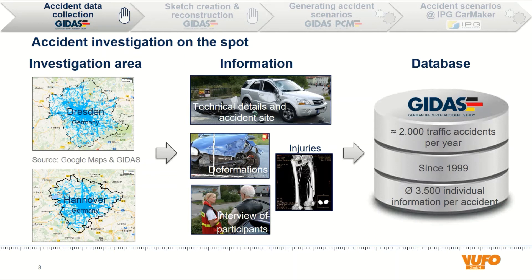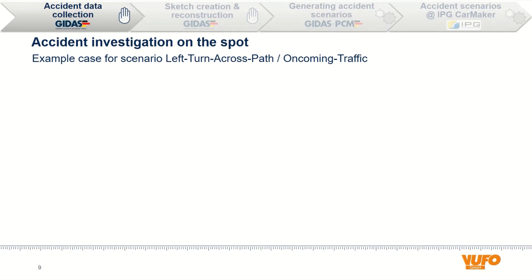This data is collected in the GEDAS database. Since 1999, about 3,000 accidents with an average of 3,500 single parameters have been collected and documented every year. We would like to show you our process flow using a significant example of an actual accident. Therefore we chose a left turn across path scenario with oncoming traffic, since it represents a frequent accident scenario and is also addressed by Euro NCAP test protocols since this year.